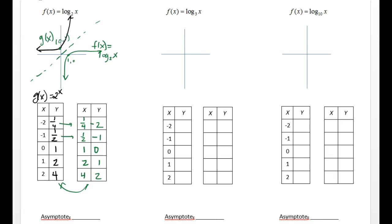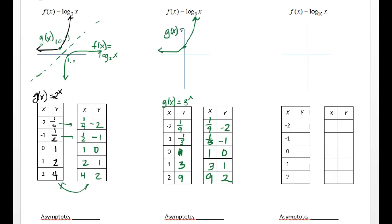Let's try another one — log base 3. So g of x equals 3 to the power of x. 3 to the negative 2 is 1 ninth. 3 to the negative 1 is 1 third. 3 to 0 is 1. 3 to the first is 3. Then if I flip my points — that should be a 1, this is 3, this is 9 — my x has become my y. So let's plot the g of x points first. This is my g of x, which is 3 to the x power.